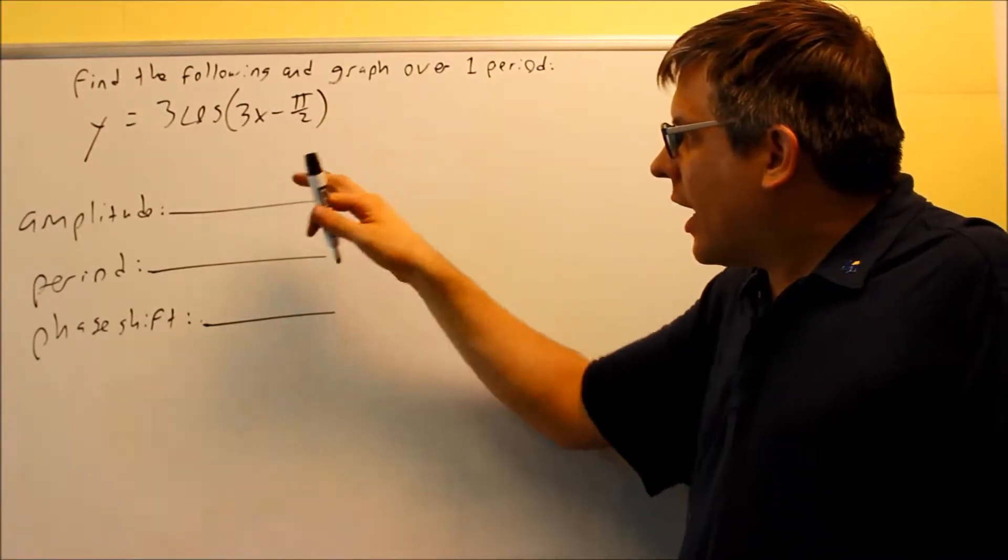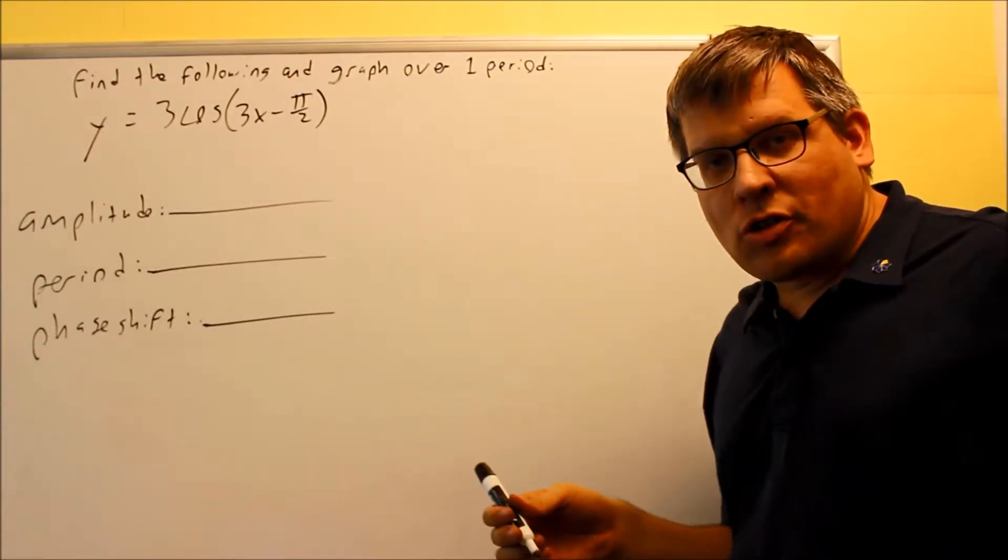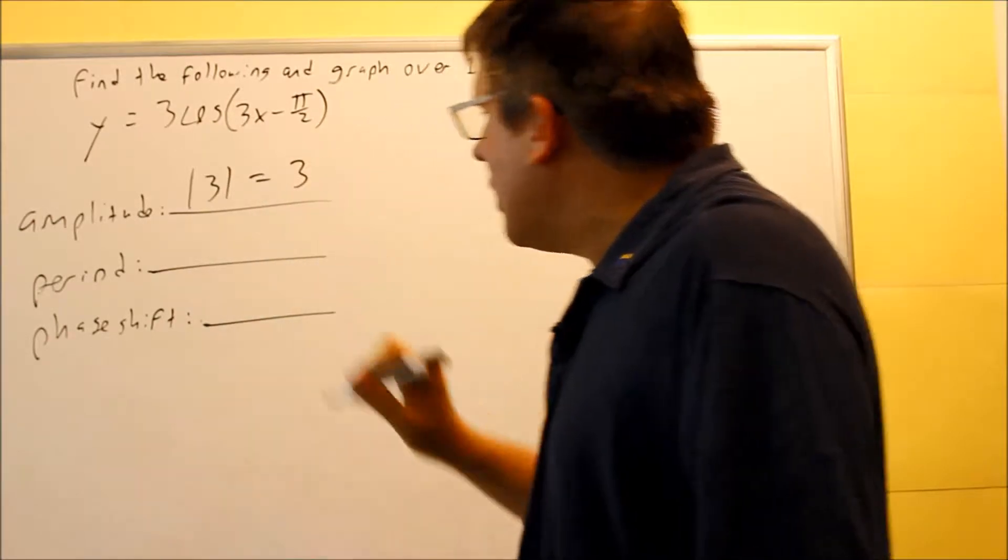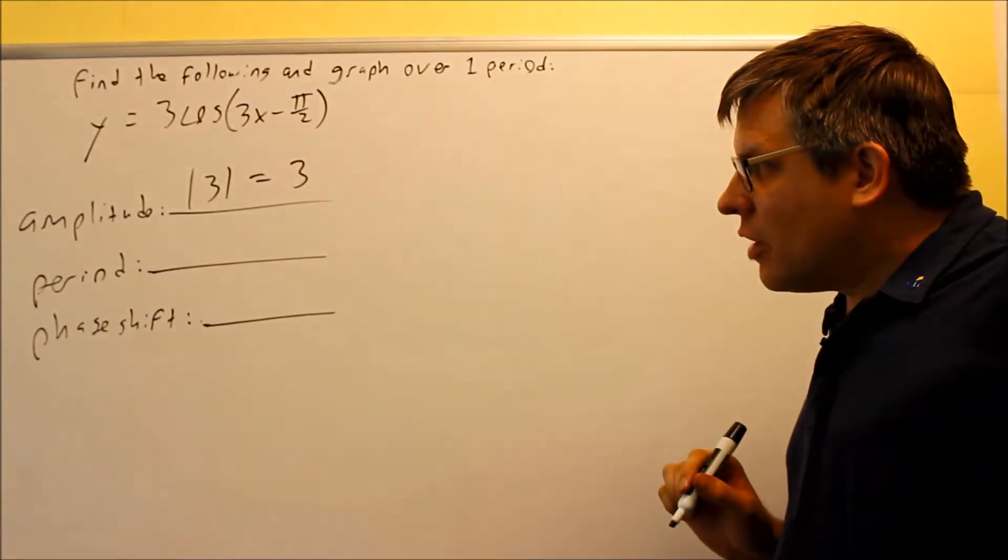So this one I have both these are going to be changing compared to the examples I did before. Now your amplitude formula is still the same. You're still going to do the absolute value of three, which is going to be three. That's going to be it for that one.